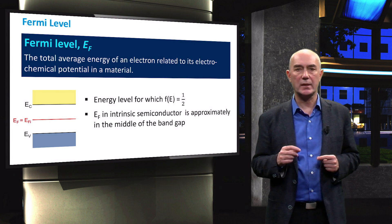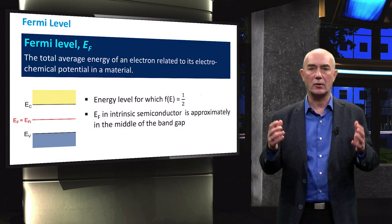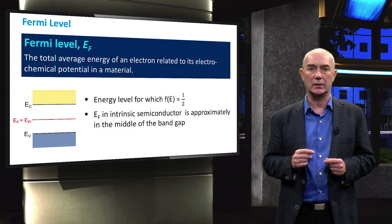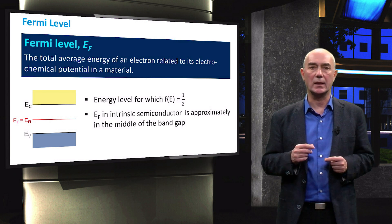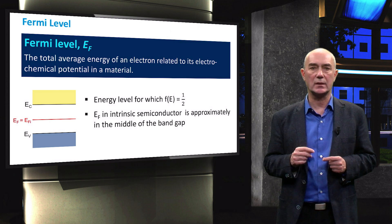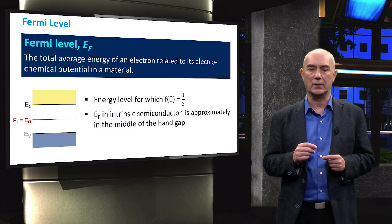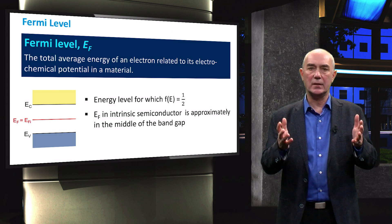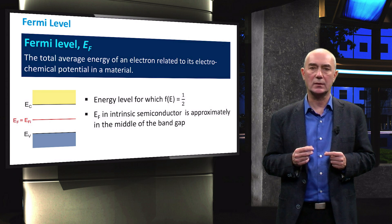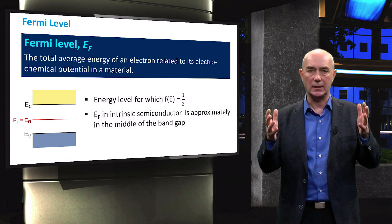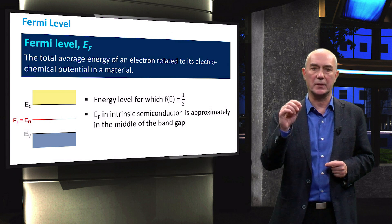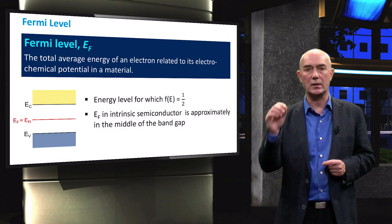In general, it represents the total average energy of valence electrons of a material. This energy takes into account the electrochemical energy of all the electrons in the conduction and valence band. From the Fermi-Dirac distribution function, we can easily calculate that the probability that the energy level corresponding to the Fermi level is occupied is 0.5.